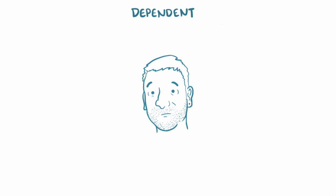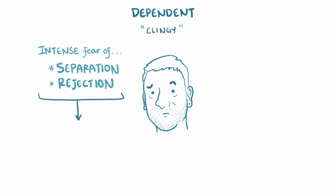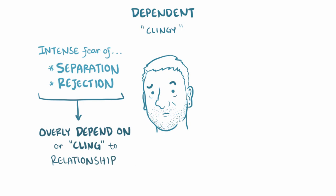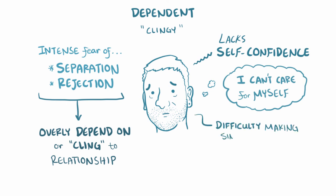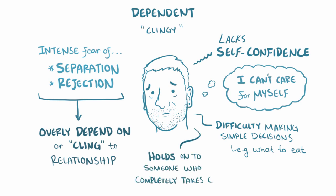Finally, we have dependent personality disorder, associated with the word clingy. These people have an intense fear of separation and rejection, so they tend to overly depend on or cling to the relationships that they do have. They lack self-confidence and believe that they can't adequately care for themselves, and they find it nearly impossible to make even simple decisions, like what to eat for lunch, becoming desperate to hold onto someone who can completely take care of them. Sadly, these individuals often get trapped in abusive relationships.